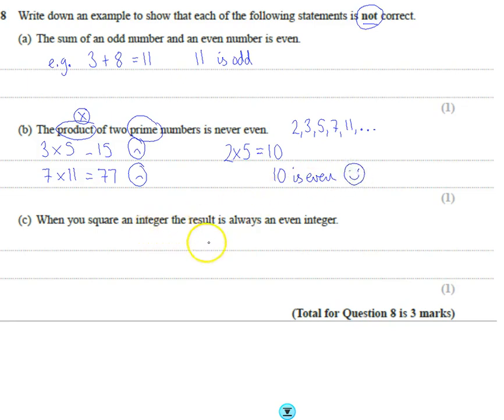When you square an integer the result is always an even integer. So let's try, well integer we need to remember what integer means. Integer means whole number, so no decimals or fractions, just a whole number. When you square an integer the result is always even. So 1 squared, which is 1 times 1, which is 1, and that is odd.